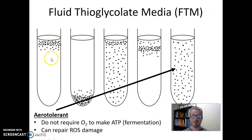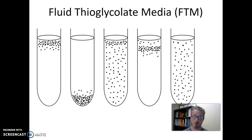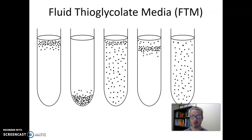So there are five classifications of microbes to understand. I hope you would be able to explain why these microbes grow in the different parts of FTM tubes based on their growth pattern, their utilization of oxygen to make ATP, and their ability to repair oxygen damage caused by reactive oxygen species. Let me know if you have any questions, and I will talk to you all very soon.